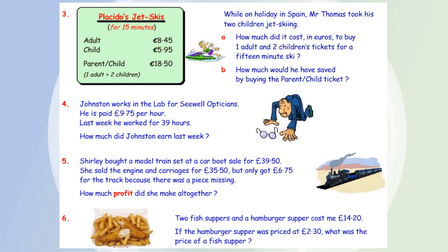Let's look at number four: two fish suppers and a hamburger supper cost £14.20. If the hamburger supper was priced at £2.30, what was the price of the fish supper? There's going to be more than one kind of sum involved there as well.